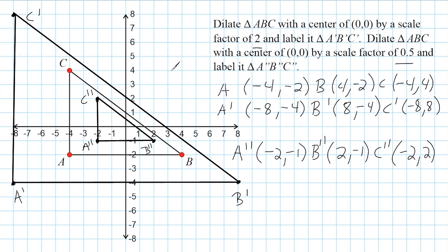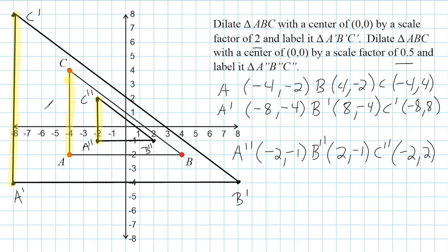We should also understand that any dilation will produce a shape that is similar to, or proportional to, the original. That means all corresponding sides of the similar shapes will be enlarged or reduced by the given scale factor. For example, this side of our triangle has a length of six units, and its corresponding side in the larger triangle is twelve units — we doubled it from six to twelve because the scale factor was two. And comparing with the smaller triangle, we went from six to three, which is a scale factor of 0.5.